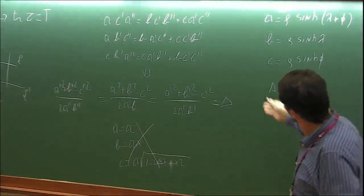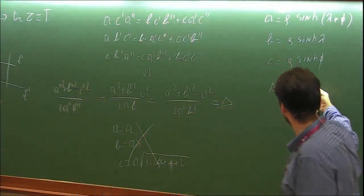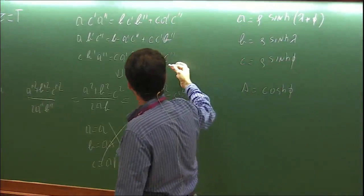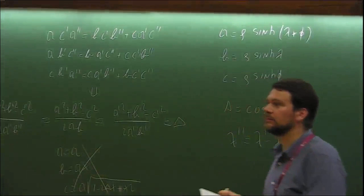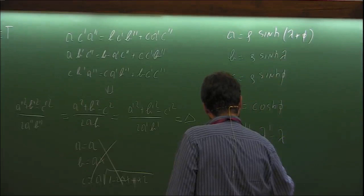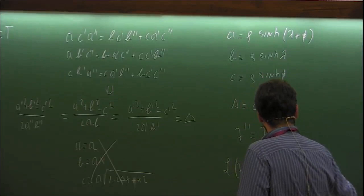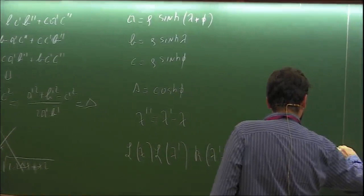Going back to the equations and using two of the three equations, you find that the R matrix has the same φ value, and that λ'' = λ' - λ. This means you can write L(λ) and L(λ'), and the RLL equation becomes L(λ) L(λ') = R(λ' - λ) L(λ') L(λ). So the commutation is satisfied.